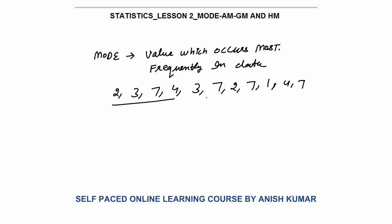You can see that I have 4, 4, 8, 11 numbers. Out of these 11 numbers, 7 is coming 4 times. So 7 is coming maximum number of times. So my mode will be equal to 7.